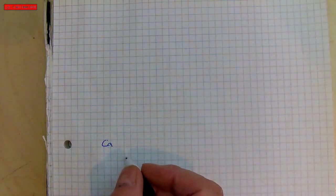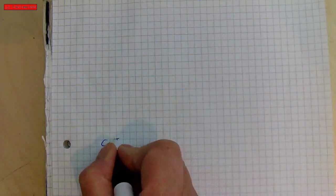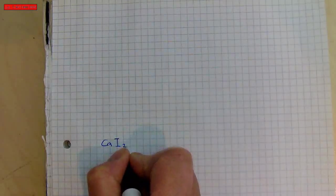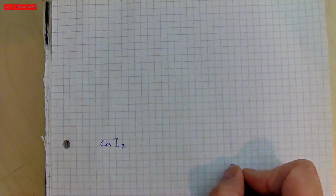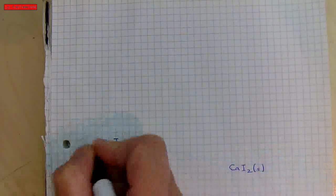I'm going to calculate the first ionisation enthalpy for calcium iodide, and calcium iodide is CaI2. Do you know what? I've put it in the wrong place. It's CaI2 as a solid.